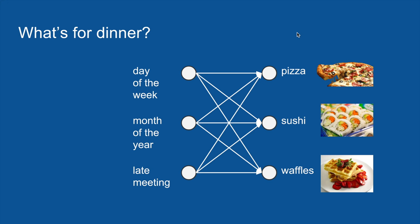So you can plan the rest of your day's eating accordingly. In order to predict what you are going to have for dinner, you set up a neural network. The inputs to this neural network are things like the day of the week, the month of the year, and whether or not your flatmate was in a late meeting — variables that might reasonably affect what you are going to have for dinner.